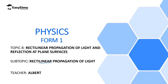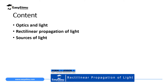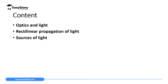Later, we are going to focus on how we can change the direction of light in what we call reflection at plain surfaces. By the end of this lesson, I expect you to be able to explain what we mean by rectilinear propagation of light, and then finally explain and give examples of sources of light.